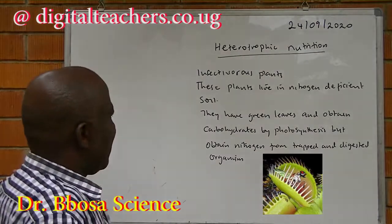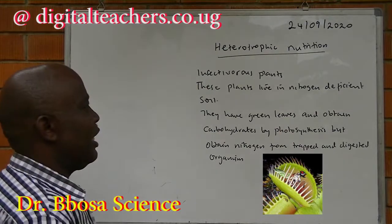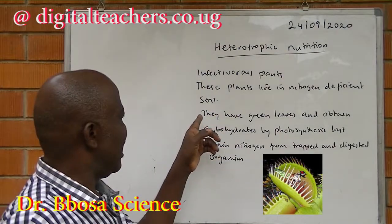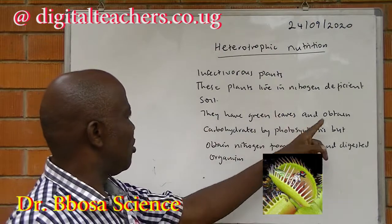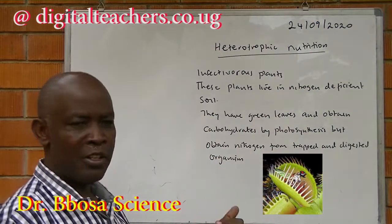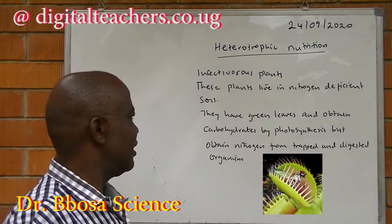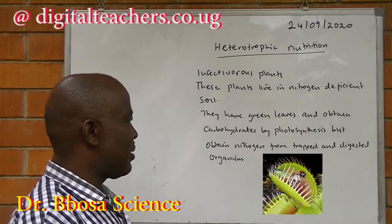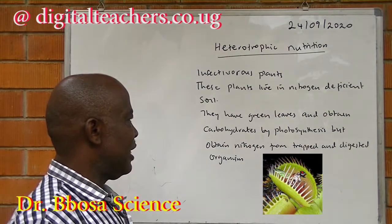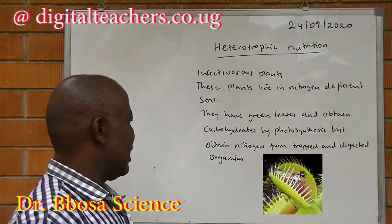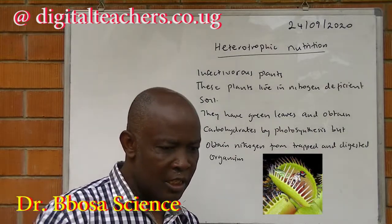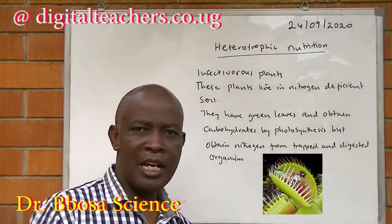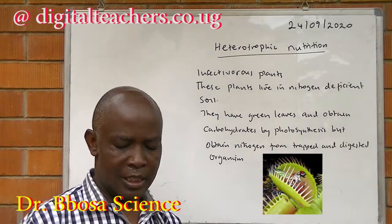Insectivorous plants live in nitrogen-deficient soil. They have leaves to obtain carbohydrates by photosynthesis, but obtain nitrogen from trapped and digested organisms, especially insects.